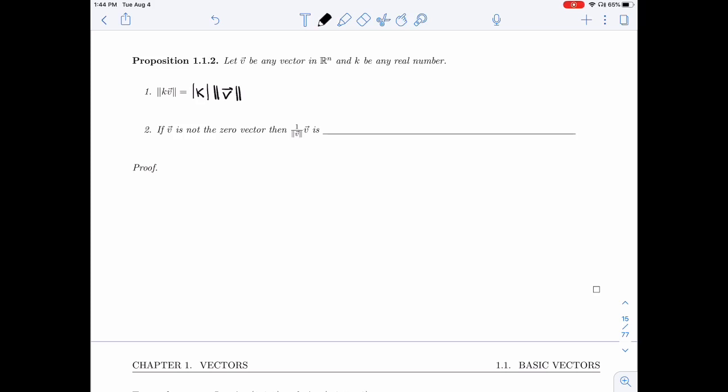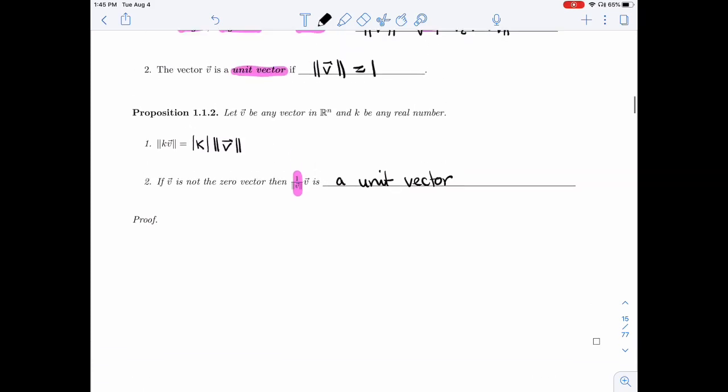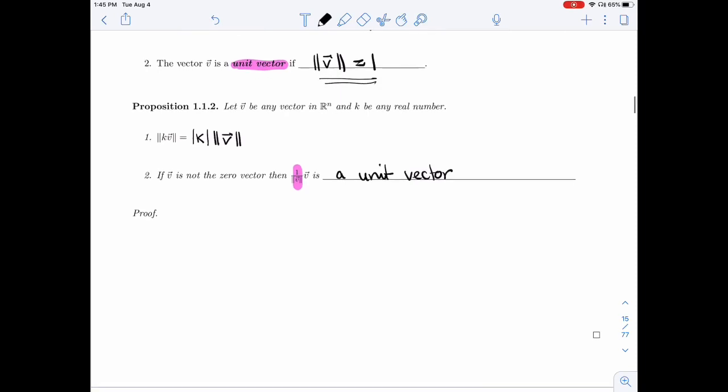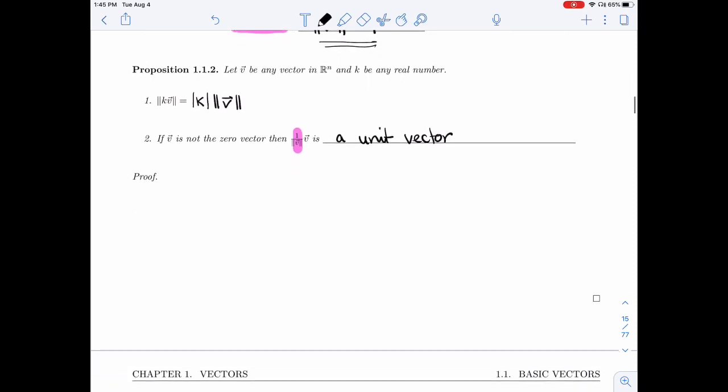Now, if V is not a zero vector, then one over length of V, notice that this right here is just a number, times V is a unit vector. And if you remember from the last definition, unit vector means that the length of V is one. So the length of this new vector is one. Perfect.